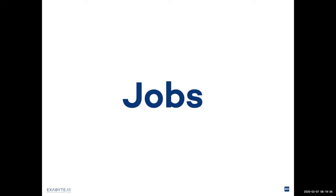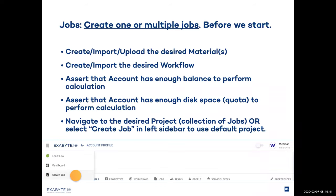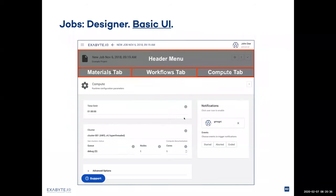Now let's proceed to the discussion of calculation jobs. Before we create one or multiple jobs, we have to make sure that we have created and uploaded all the desired materials information, and that we have created all the necessary workflows. A workflow is only used in a single way — we can only add one workflow to a job designer. However, we can add multiple materials to make the process high-throughput. We need to assert that the account has enough balance to perform these calculations and enough disk space. To create a job, we either navigate to a desired project — that's how we organize the jobs; a project is simply a collection of jobs — or we can click 'create job' in the left-hand sidebar to use the default project.